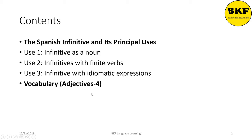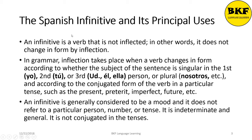Let's start with the Spanish infinitive and its principal uses. An infinitive is a verb that is not inflected — in other words, it does not change in any form. In grammar, inflection takes place when a verb changes in form according to whether the subject is singular, in the first person as in 'yo,' second as in 'tú,' or third as in 'usted,' 'él,' or 'ella,' or plural like 'nosotros,' and according to the conjugated form in a particular tense such as the present, preterite, imperfect, and future.